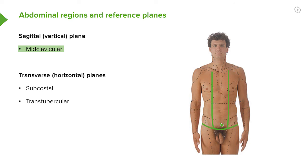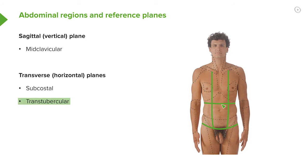This divides the abdomen into three vertical bands. We can also look at two transverse or horizontal planes going across the abdomen. We have one known as the subcostal plane, running in line with the tenth costal cartilage horizontally, and then we have another one known as the trans-tubercular line which runs across. This now divides the surface of the abdomen into nine regions.